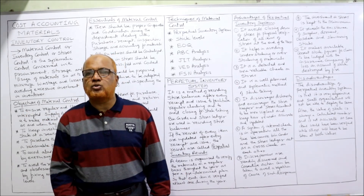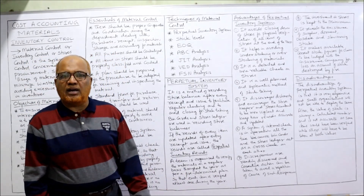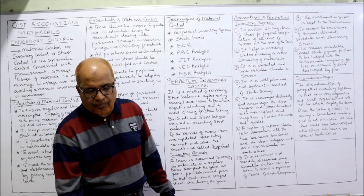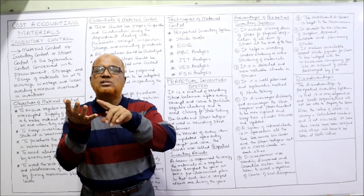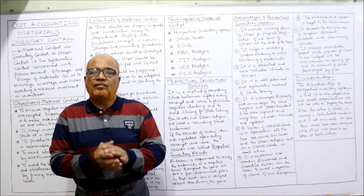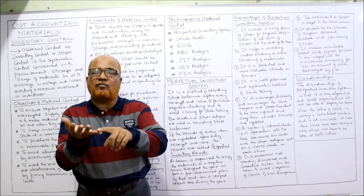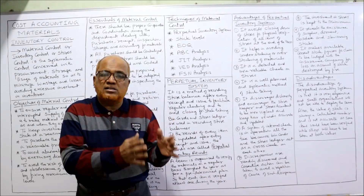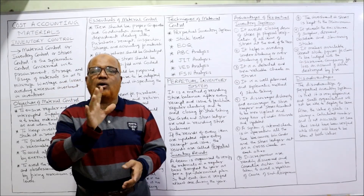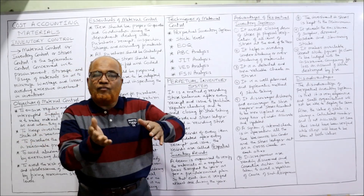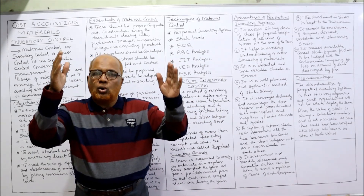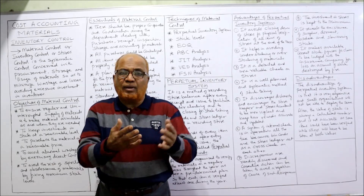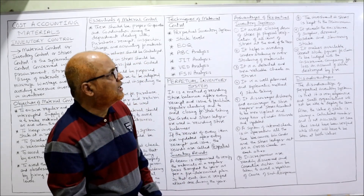In examinations you may get a question about the advantages and disadvantages of the perpetual inventory system. The first advantage is it avoids closing down of stores for physical verification of all items at the end of the year. When financial statements — profit and loss account and balance sheet — are prepared, we need the closing stock. With the perpetual inventory system, the value of closing stock can easily be found from records without physical stock taking, which would require closing the business and counting all goods.